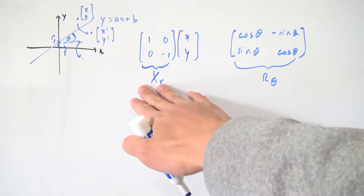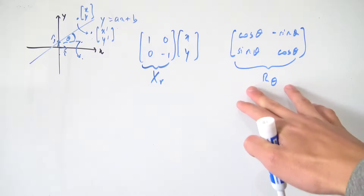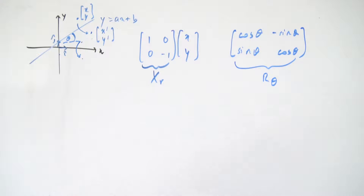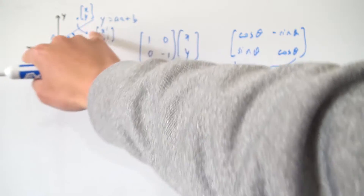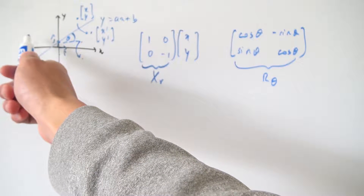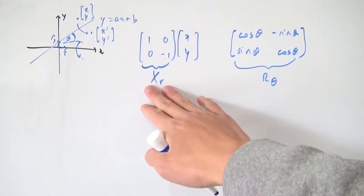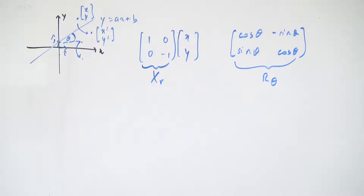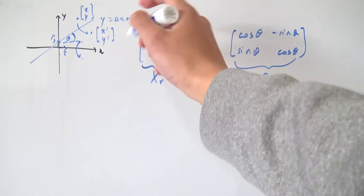We know how to reflect things in the x axis and we know how to rotate things. But notice one crucial thing: if we rotate the whole entire plane, this linear line doesn't actually go onto the x axis — it's going to be a line floating above the x axis. So we need to fix that somehow in order to use our x-axis reflection matrix. It would be a good idea to translate everything down by b first.